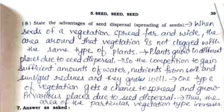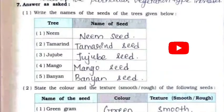Eighth: state the advantages of seed dispersal. When seeds of a vegetation spread far and wide, the area around that vegetation is not clogged with the same type of plants. Plants grow in different places due to seed dispersal, so competition to gain sufficient water, nutrients, and sunlight reduces and they grow well. One type of vegetation gets a chance to spread and grow in various places, thus the area of that vegetation type increases.